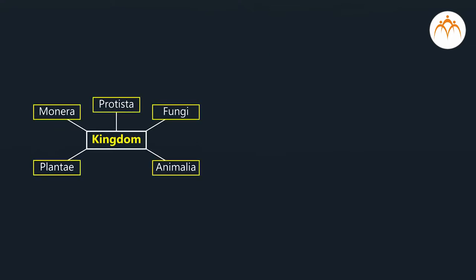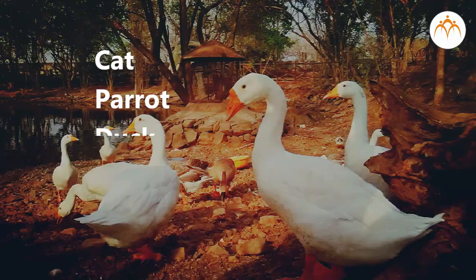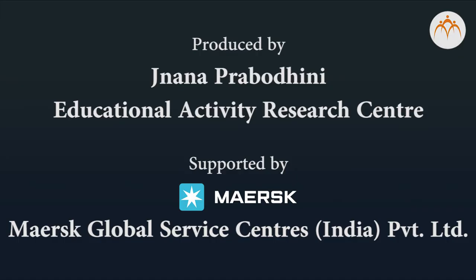Students, we have just now studied Whitaker's system of classification. I would like you to compare this system with the system proposed by Linnaeus. It will help you to understand the drawbacks of Linnaeus's system and the need for proposing a new one. Students, you can also design your own classification system by listing characters of the following organisms: cat, parrot, duck, fish, and monkey.